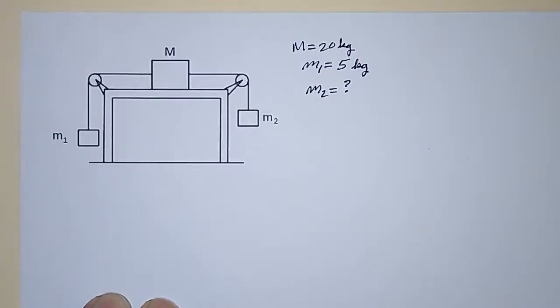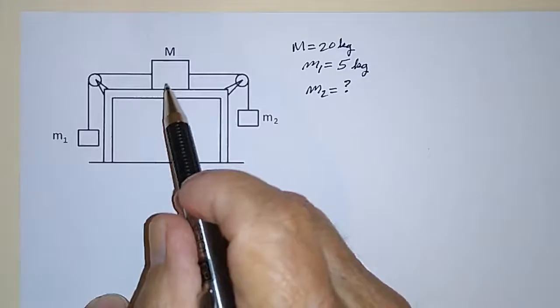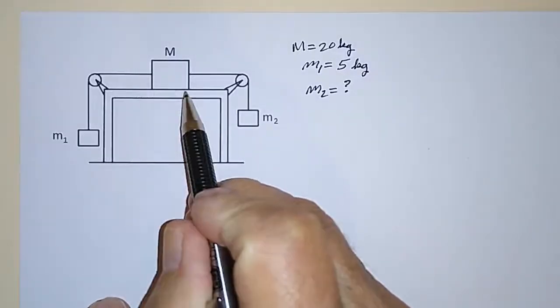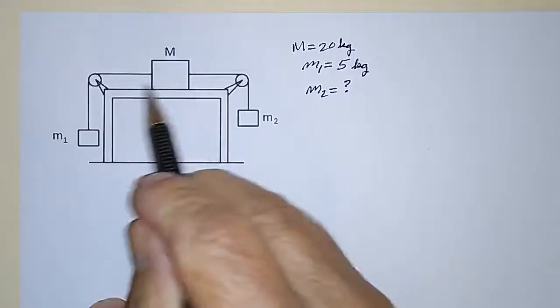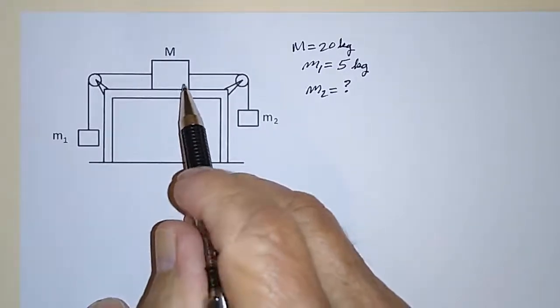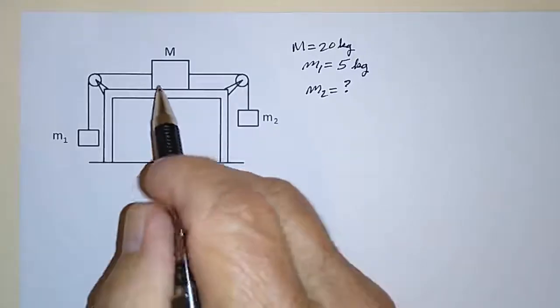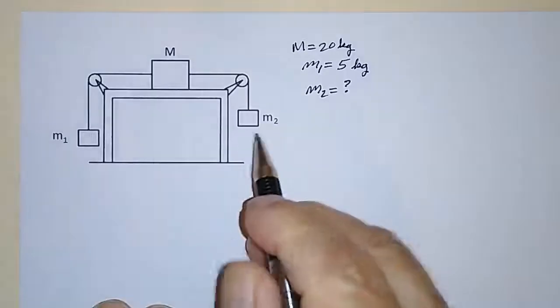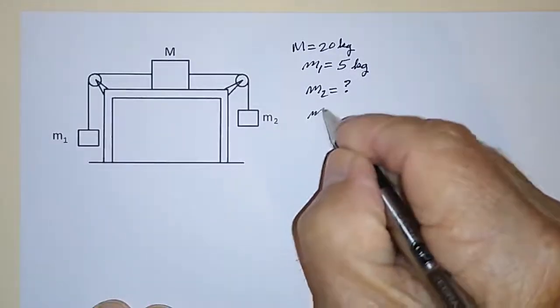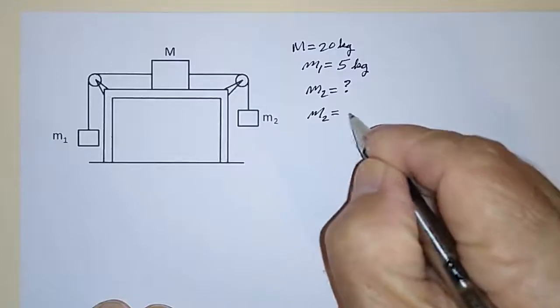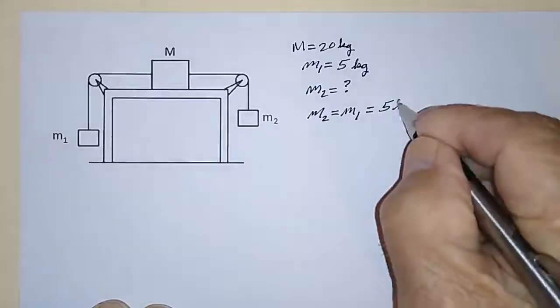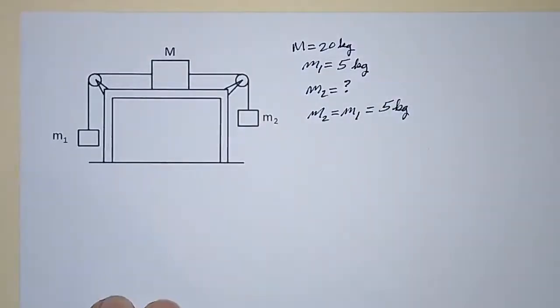Well, that almost seems trivial because, obviously, if this mass is sitting on a frictionless table, there's no friction resisting the movement one way or the other, so it wouldn't make any difference whether it's there or not. In other words, I could just connect this cable straight across. And then, obviously, M2 would have to be equal to M1. You can just write down the answer like that. So M2 is equal to 5 kilograms. Well, that's pretty easy.